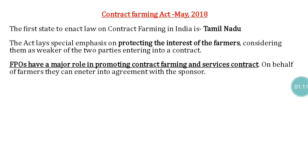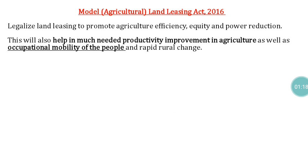The Contract Farming Act, which came into force in May 2018, mainly protects the interest of farmers. The Model Agricultural Land Leasing Act 2016 legalized land leasing to promote agricultural efficiency, equity, and poverty reduction. This act was formulated to help the government achieve productive improvement in agriculture.